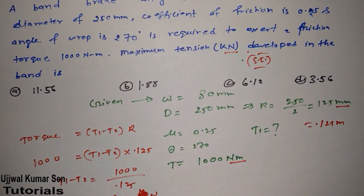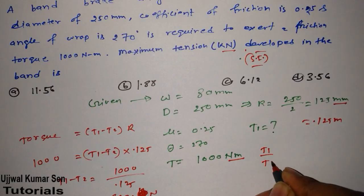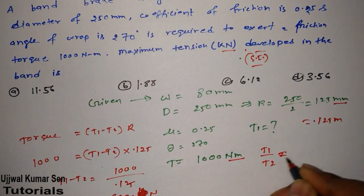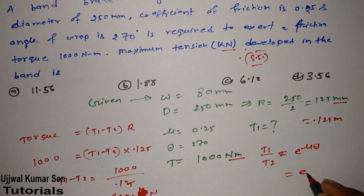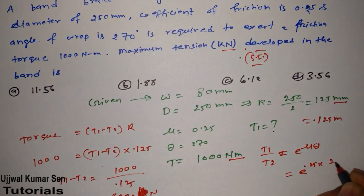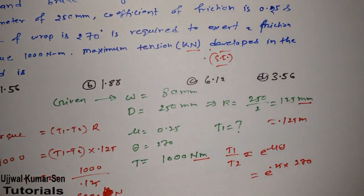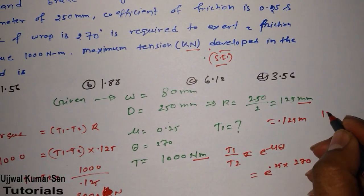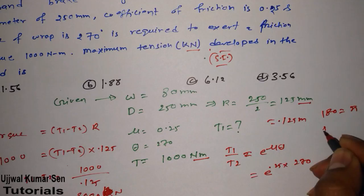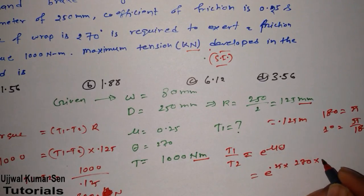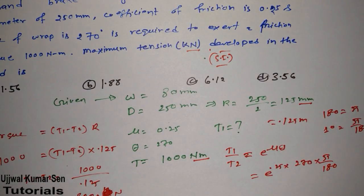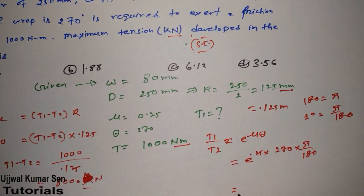Now therefore, we know another equation. That is another formula. T1 by T2 is equal to e to the power mu theta. We know mu is 0.25. Theta is 270. But we have to change this into radian. So we know that 180 is equal to pi. So 1 degree is equal to pi by this much. So 270, I have to multiple this by pi by 180. We can do this. So we have to solve this one. Let's solve this.